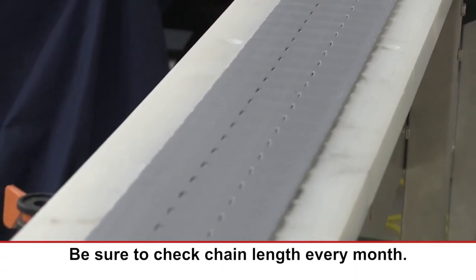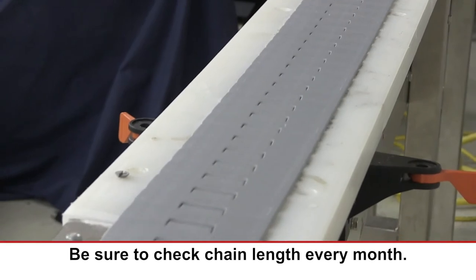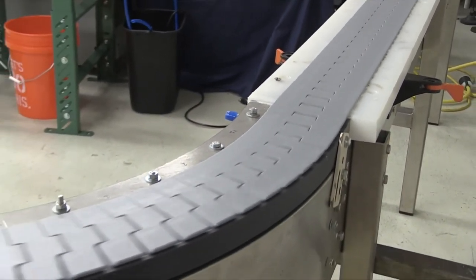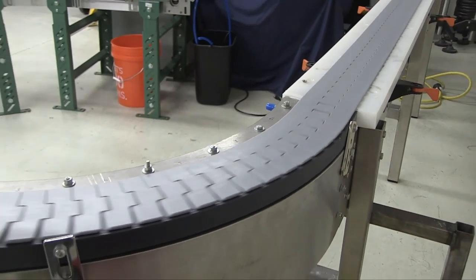This will allow you to replace the chain during planned downtime once it reaches 3%. Refer to your Rexnord Engineering Manual for additional instruction in changing out your chain.